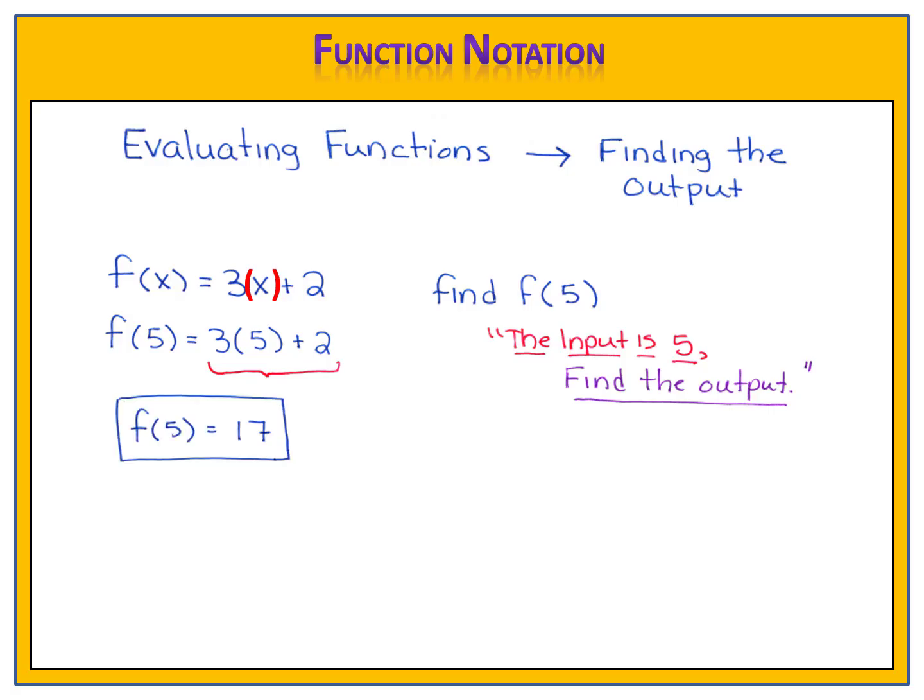So f(5) = 17. What does that mean? When the input is 5, the output is 17. If we were to look at that in an input and output table, we'd have our 5 for the input, and 17 for the output. And if we looked on a graph, we'd find the point (5, 17). Of course, do you have to write all of this on your paper? No, the only thing you really need to have written on your paper is what's written right here. f(5) = 3 times 5 + 2, and then the answer, f(5) = 17.